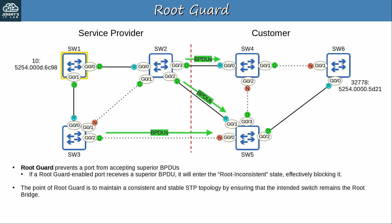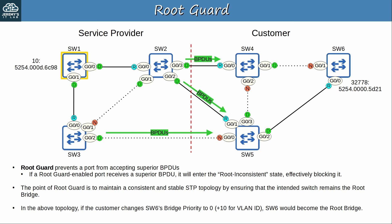Under normal circumstances, BPDUs are forwarded from the service provider's SW2 and SW3 to the customer's switches. BPDUs aren't forwarded from the customer to the service provider. However, if the customer changes SW6's bridge priority to 0 — plus 10 for the VLAN ID, using VLAN 10 in this example — SW6 would become the root bridge.